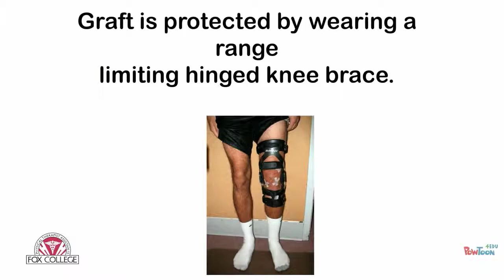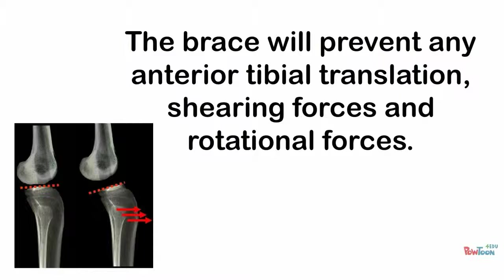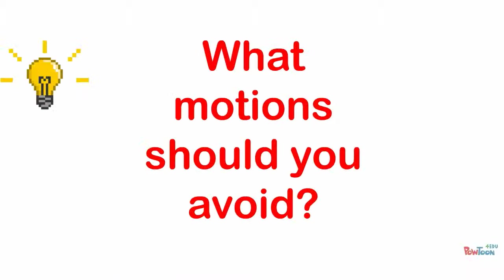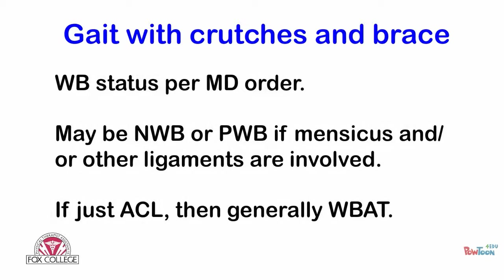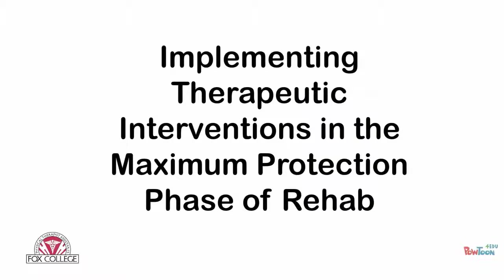The graft may be protected by wearing a range-limiting hinged knee brace, which will prevent anterior tibial translation, shearing forces, or rotational forces. Weight-bearing status is per MD orders — it could be non-weight-bearing or partial if the meniscus or other ligaments are involved. If it's just the ACL, it's generally weight-bearing as tolerated.